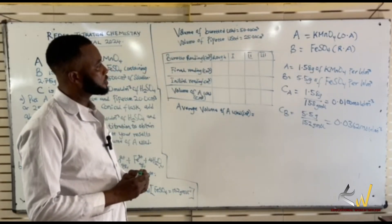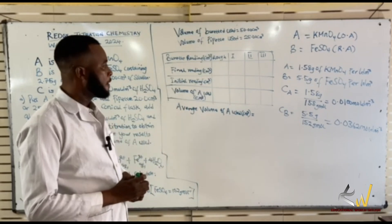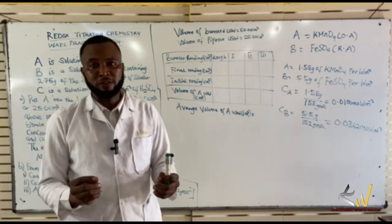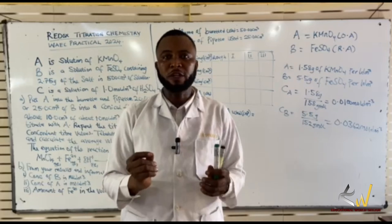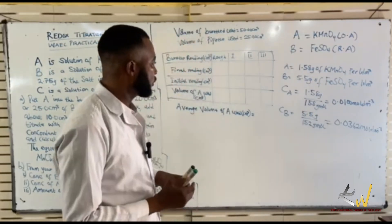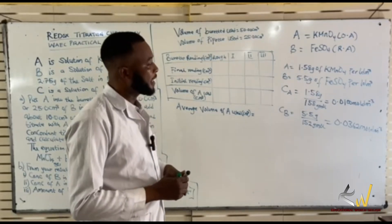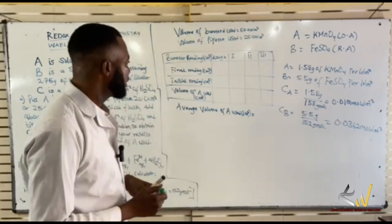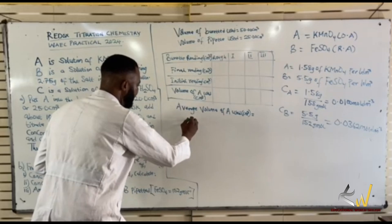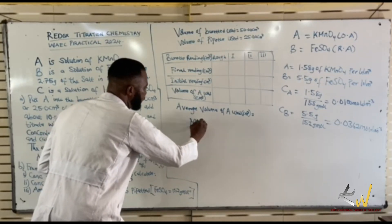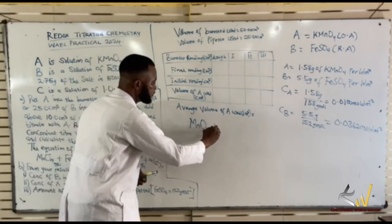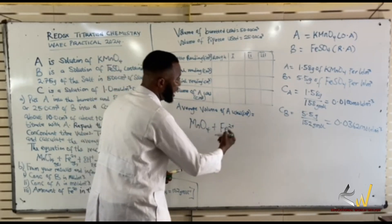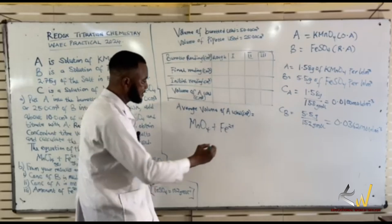Now this is the rough work we are going to be doing. In redox titration, the equation of the reaction is represented in ionic form. It is always acidified with dilute H2SO4 for the redox reaction to take place. The ionic form of KMnO4 is MnO4⁻, and it reacts with iron(II) sulfate, giving Fe²⁺.